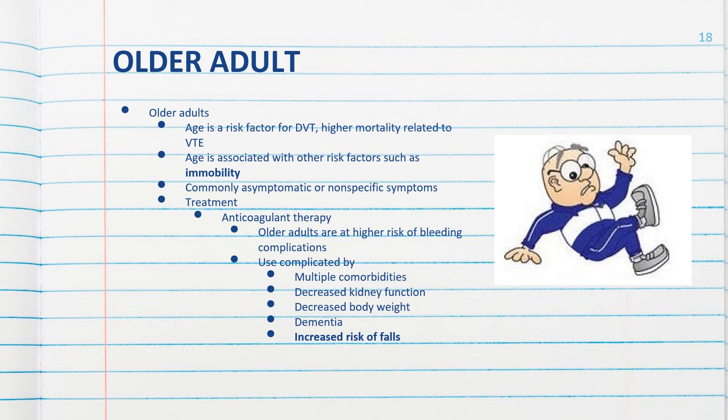Age is a real risk factor for DVTs, and the risk for thrombosis increases 30-fold between the ages of 30 and 80. Fatality rates related to VTE are also higher in older adults than in younger age groups. In addition to being an independent risk factor, age is associated with the development of other risk factors including venous stasis, conditions that limit mobility, cancer, and cancer therapies.